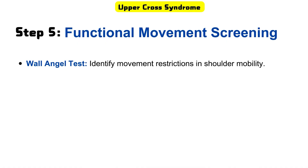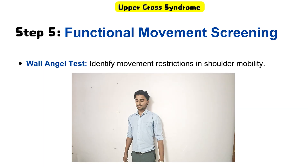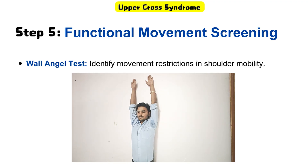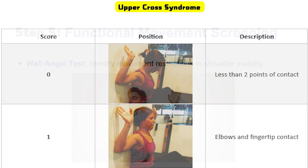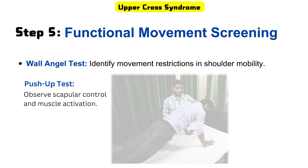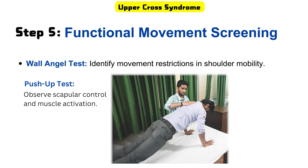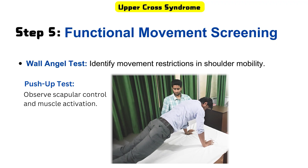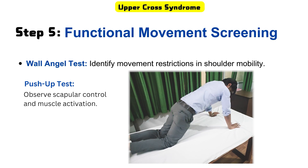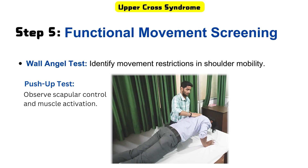Step five is functional movement screening, where we perform two functional tests. First is the wall angel test — the patient stands against the wall with as much contact as possible and elevates both arms to make them straight without losing wall contact. We check for points of contact and restrictions in range of motion. Second is the push-up test — the patient performs a full push-up or a knee-supported push-up as suitable. We observe scapular control and muscle activation by noticing winging or tipping of the scapula.